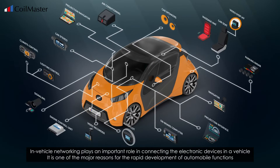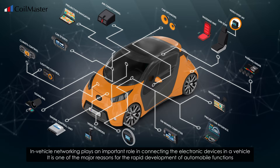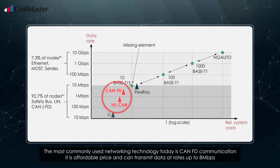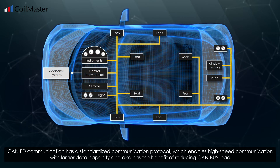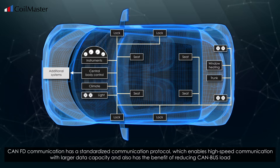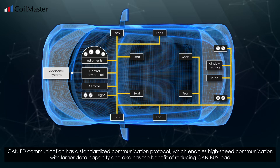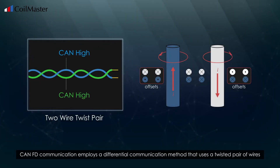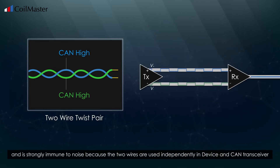In-vehicle networking plays an important role in connecting the electronic devices in a vehicle, and is one of the major reasons for the rapid development of automobile functions. The most commonly used networking technology today is CAN FD communication. It is affordable and can transmit data at rates up to 8 megabits. CAN FD has a standardized communication protocol enabling high-speed communication with larger data capacity, and also reduces CAN bus load. CAN FD employs a differential communication method using a twisted pair of wires, making it strongly immune to noise.